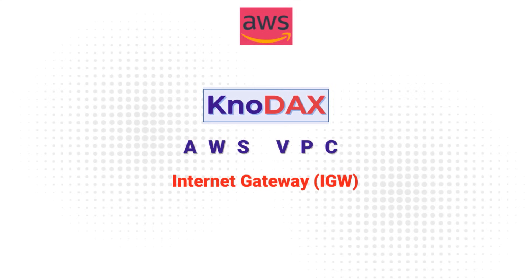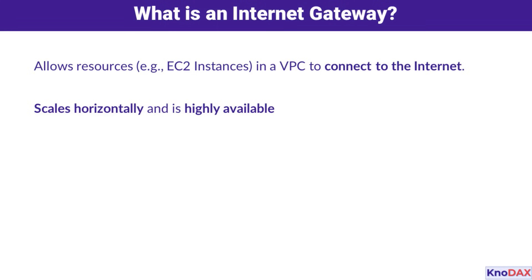Welcome! In this video, we're going to explore the concept of an Internet Gateway within AWS and understand its role in enabling Internet connectivity for resources inside your VPC. An Internet Gateway is a horizontally scalable and highly available AWS resource that allows resources in a Virtual Private Cloud, or VPC, to connect to the Internet. This is essential for scenarios like hosting web applications or enabling outbound Internet access for updates. An Internet Gateway ensures that the traffic is routed efficiently and securely.